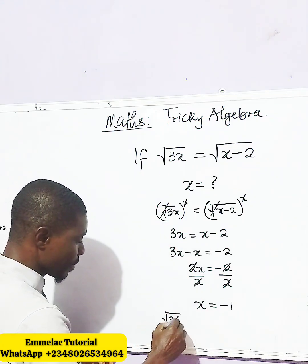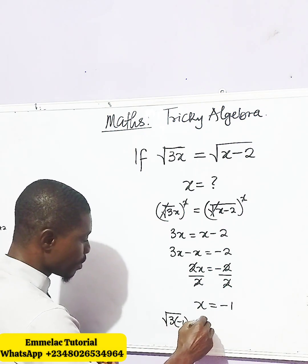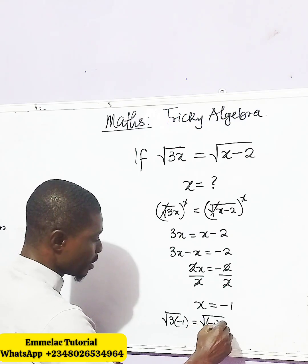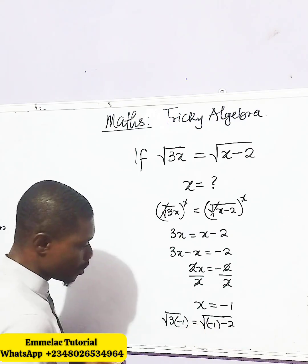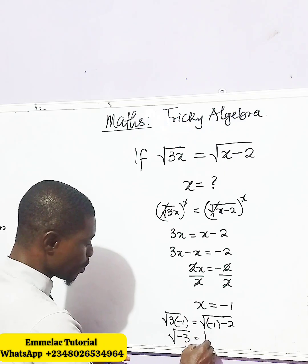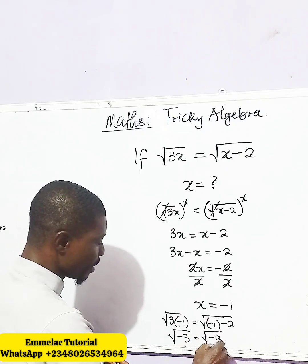We have that 3 into negative 1 equals the square root of negative 1 take away 2. So we end up having the square root of negative 3 equals the square root of negative 3.